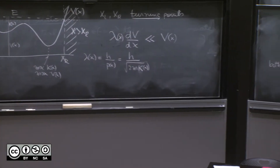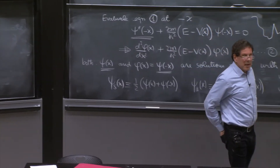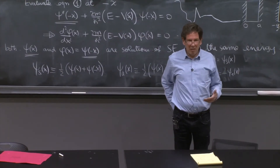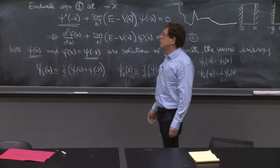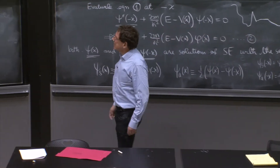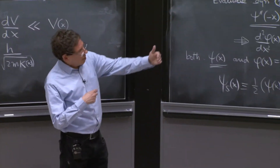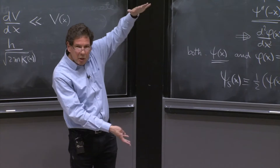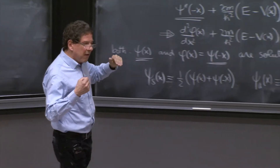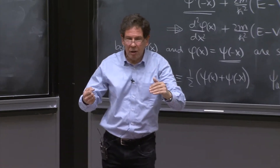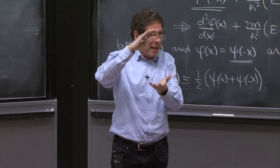There's one more property that is important, called the correspondence principle, which is another classical intuition. It addresses the question of what happens to the amplitude of the wave function. It says that the wave function should be larger in the regions where the particle spends more time.